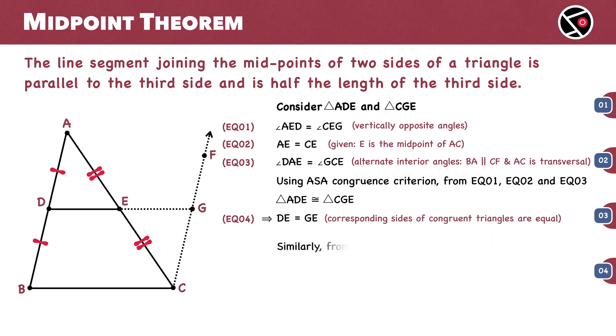Similarly, the congruence of these triangles implies that AD equals CG. Now, since D is a midpoint of AB, AD equals BD. Substituting AD with BD gives BD equal to CG.